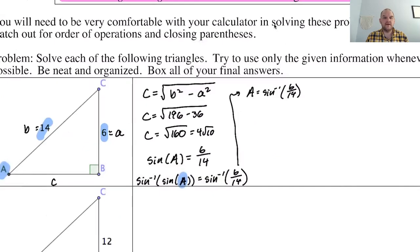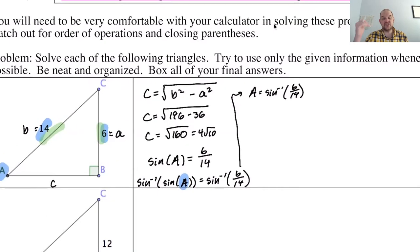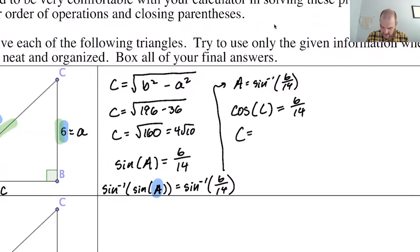Angle B is 90 degrees — that's given. For angle C, I still know the given sides: 6 and 14. The side of length 6 is adjacent to C and 14 is the hypotenuse, so the cosine of C equals 6 over 14. Taking the inverse cosine of both sides gives us C equals the inverse cosine of 6 over 14.